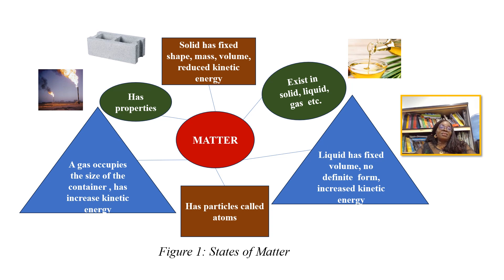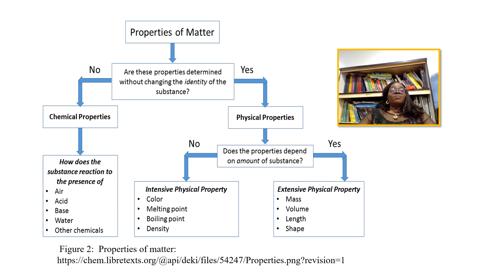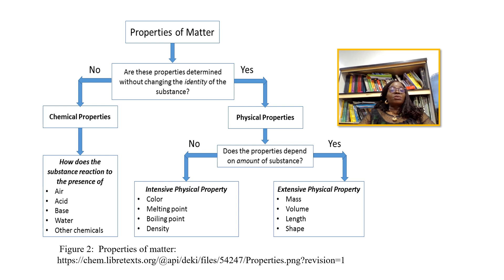So these are the three basic states: the solid state, the liquid state, and the gas state. We have the physical properties of matter and we also have the chemical properties. We ask ourselves: are these properties determined without changing the identity of the substance? If the properties of the substance are changed, then chemical properties will be formed. But if the properties of the substance are not changed, we will form what we call physical properties.